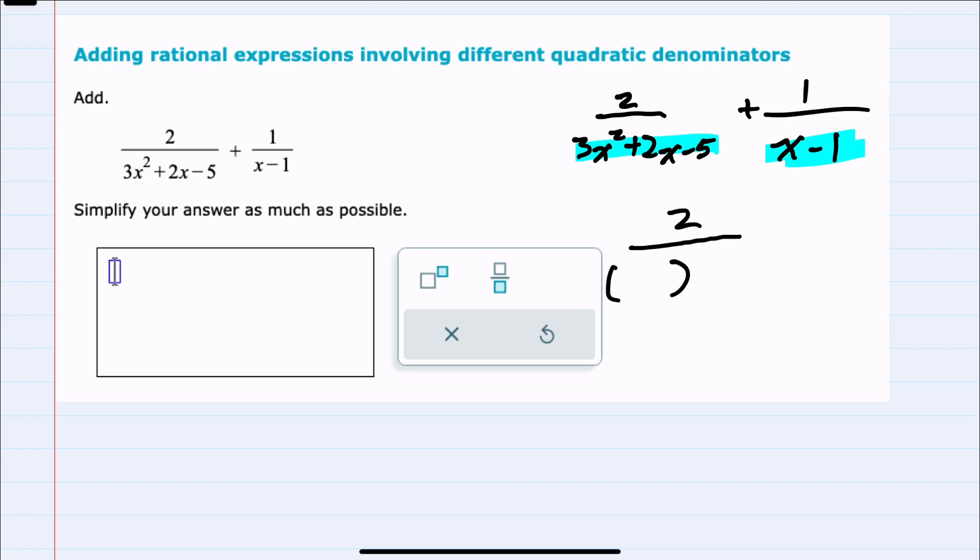I'll start with just trial and error. Since we have a 3x squared, I'll make this a 3x and an x. Our possibilities here for negative 5 would have to be a 1 and 5 with different signs. If I put the 1 here and the 5 here, this would give me a 5x and a 3x. Since they need to have different signs and add up to a 2x, I'll make the 5 positive for a positive 5x and the 1 negative for a negative 3x. Those would add to that positive 2x.